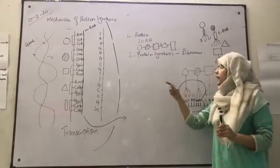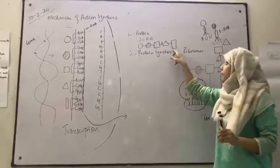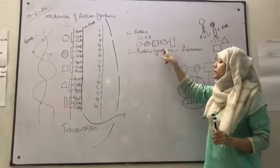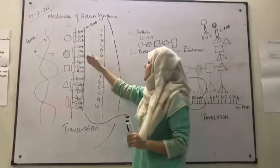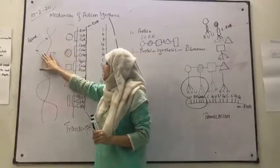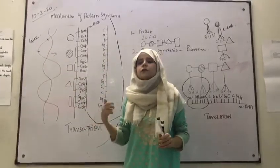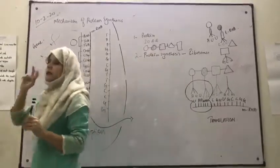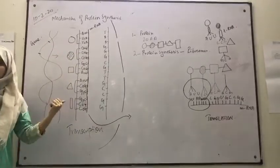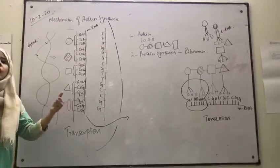Now the question arises: which structure decides the arrangement of amino acids in a protein molecule? The arrangement of amino acids in a protein molecule is decided by the gene. What is a gene? The whole DNA is divided up into sections — these sections are called genes. Gene is a unit of inheritance. Each gene is responsible for the coding of one protein molecule, that is one character.